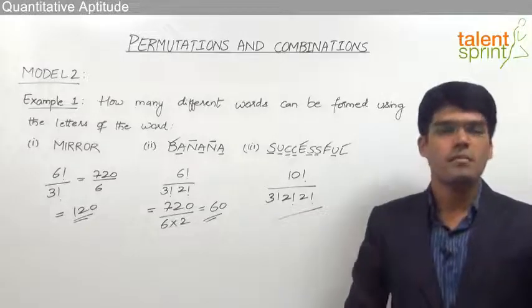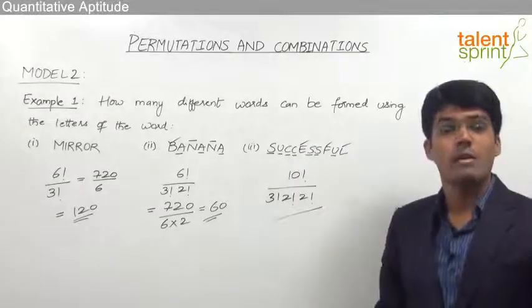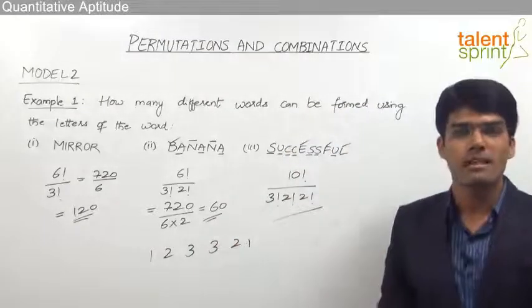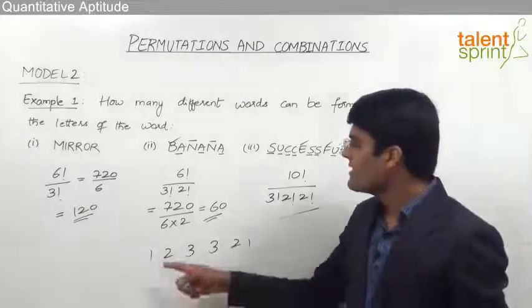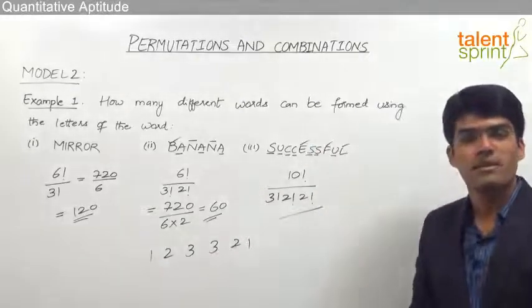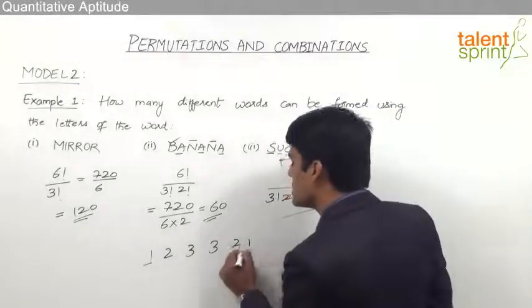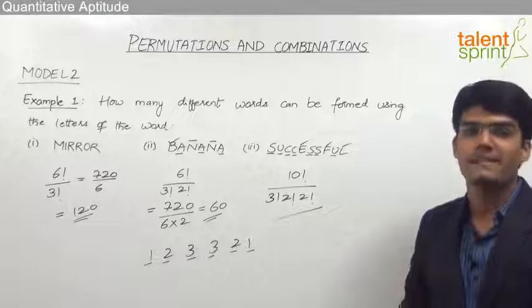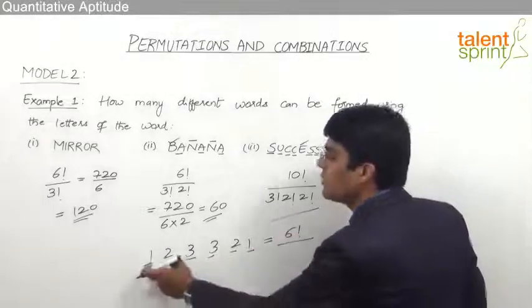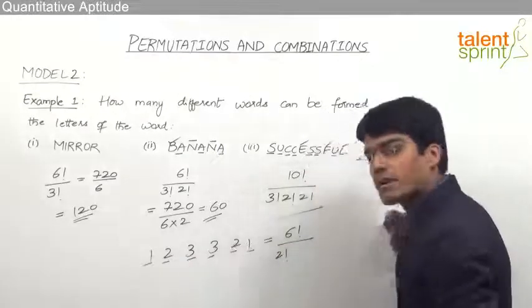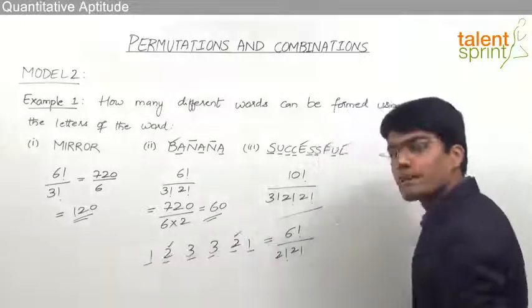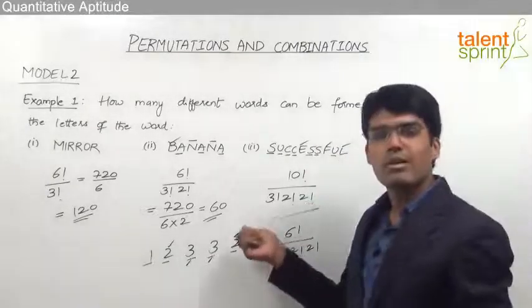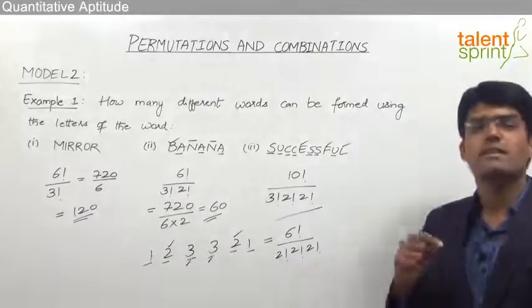A similar kind of question can also be asked in case of digits. Let us say we have got 6 digits: 1, 2, 3, 3, 2, 1. The question is how many 6-digit numbers can be formed using these 6 digits. In general, when there are 6 digits and we need to form 6-digit numbers, we take the answer as 6 factorial. But here the digit 1 appears twice, the digit 2 appears twice, and the digit 3 also appears twice. So the correct answer should be 6 factorial divided by 2 factorial into 2 factorial into 2 factorial. Whatever the type of object — letter or digit — we need to take the factorial in the denominator whenever there are repetitions.